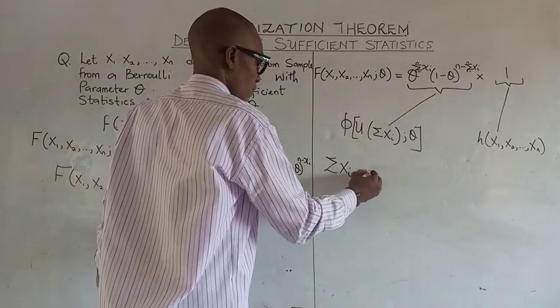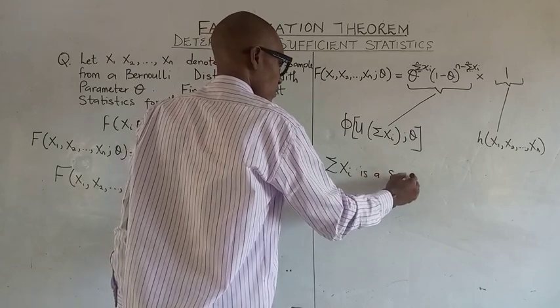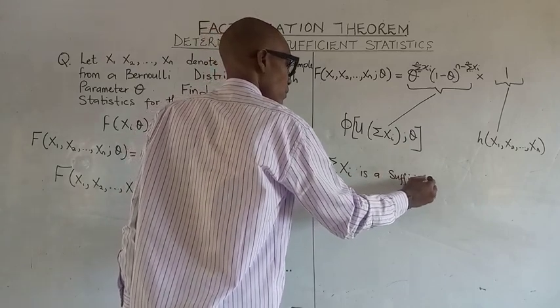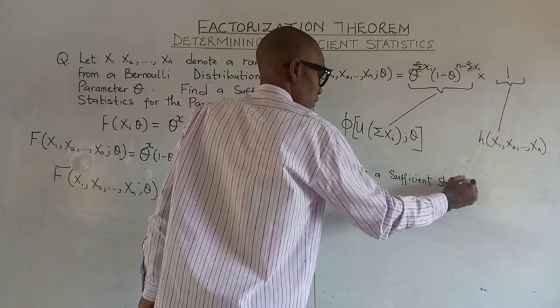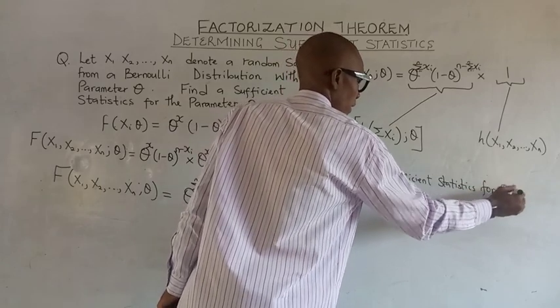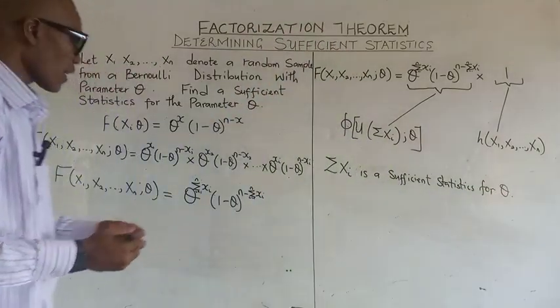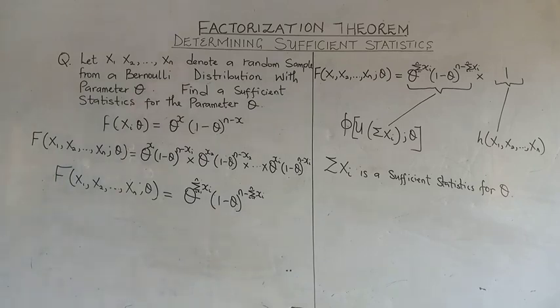summation of xi is the sufficient statistic for the parameter theta as regards the Bernoulli distribution.